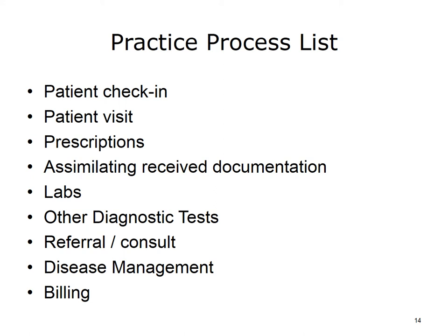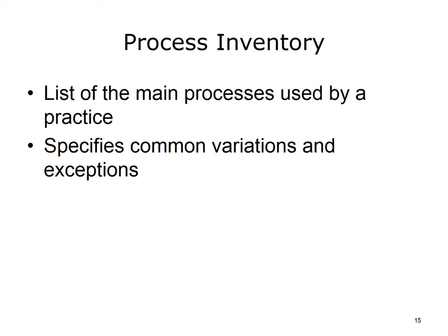These steps are preparatory to process analysis and are covered in separate units. Additional detail is needed for process analysis. An inventory should also specify which of the common process variations are in use at the practice. For example, virtually all practices need to obtain biological samples and have them analyzed. However, how and where the lab samples are processed varies among clinics. The common variations are: all lab tests are processed and analyzed at the clinic; blood is drawn at the clinic but samples are sent to a central lab for processing; or some of both, depending on the type of sample and the tests needed. The workflow, data flow, and information needs for each of these variations differs.